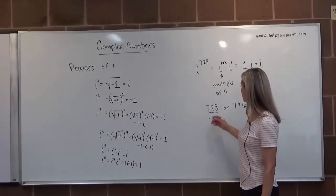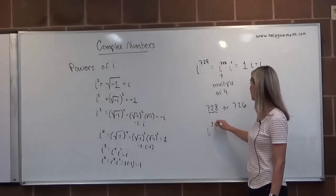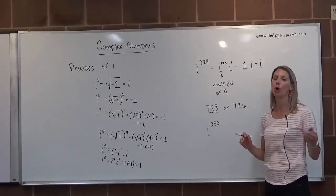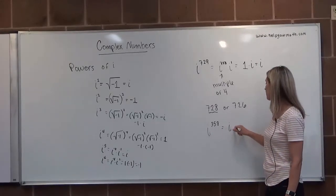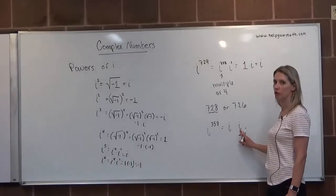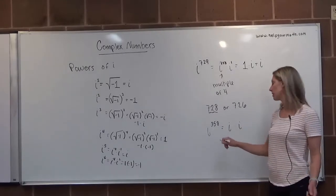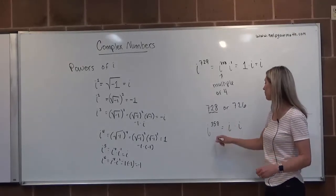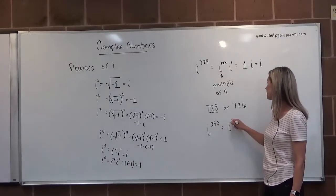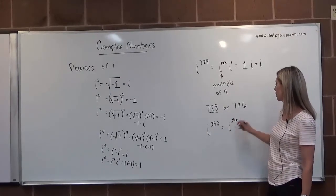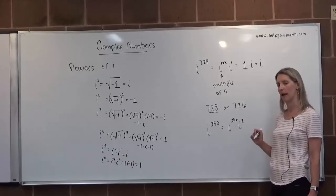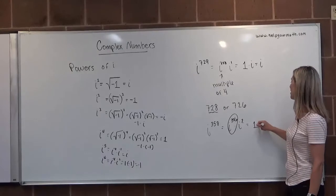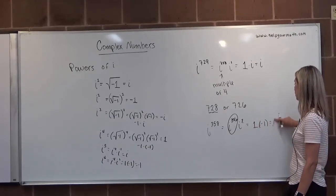Let's try one more example: i to the 358th power. Since 358 is even, it might be a multiple of 4, or it's 2 away from one. We check: is 358 a multiple of 4? Is 58 a multiple of 4? It is not. So the even number directly before 358 that is a multiple of 4 is 356. We rewrite this as i to the 356th times i squared. i to the 356th equals 1 since 356 is a multiple of 4, and i squared is negative 1, so 1 times negative 1 is negative 1. Therefore, i to the 358th equals negative 1.